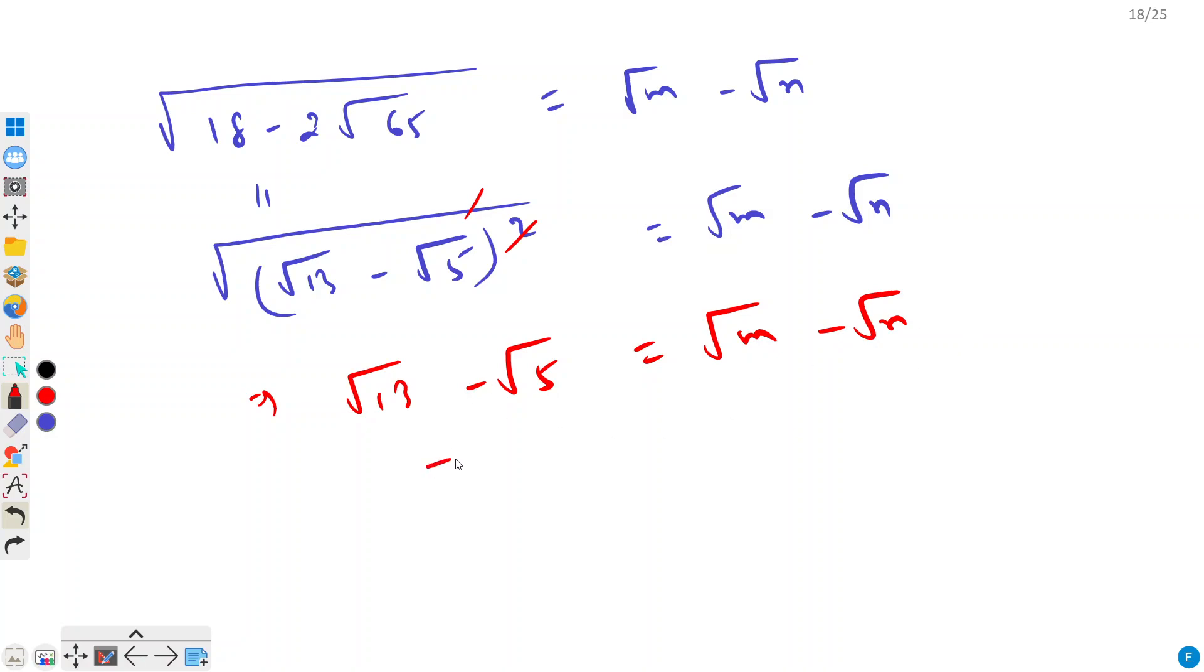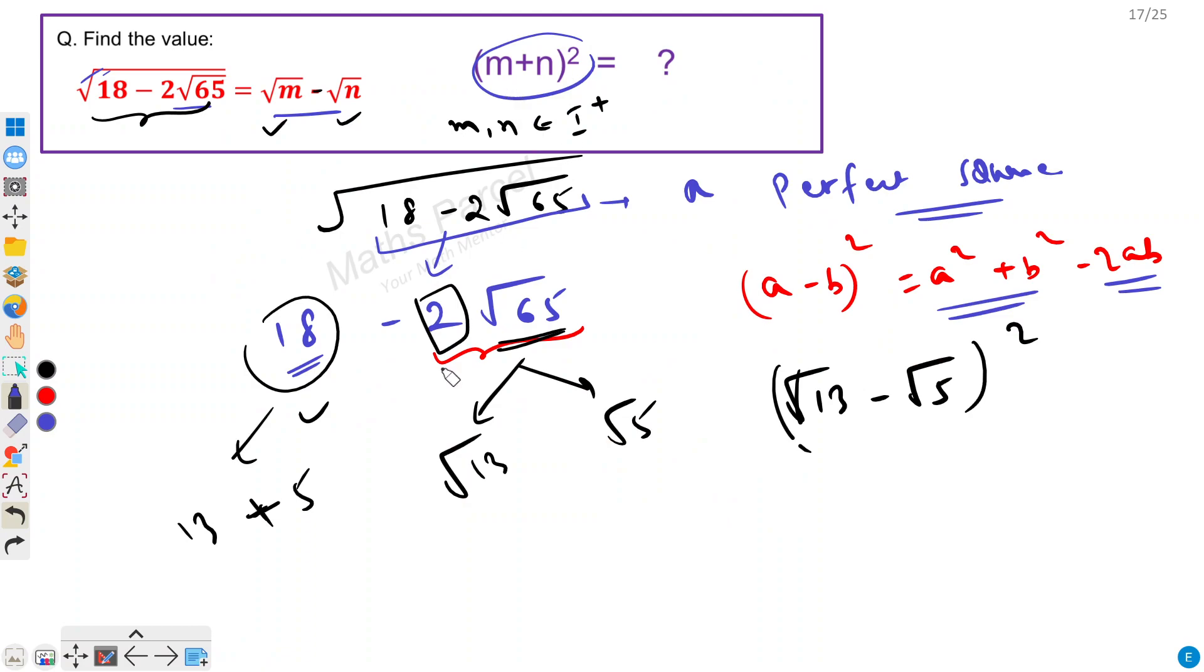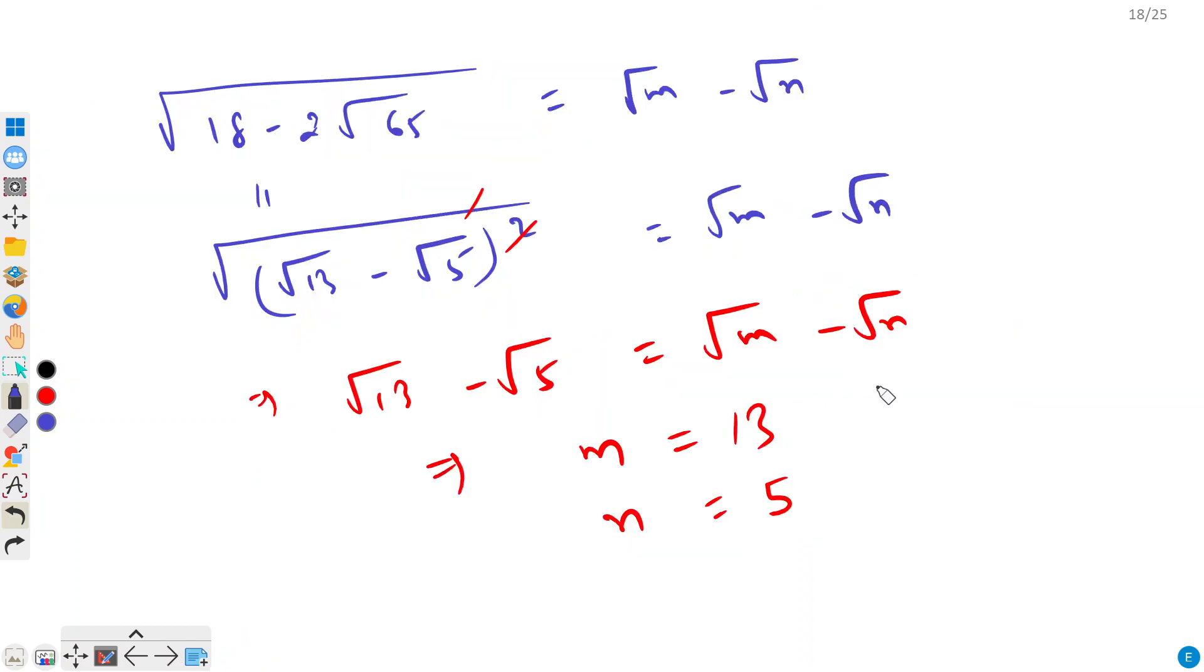So if we equate this then we will get m equal to 13 and n equal to 5. Now this is not our answer. We have to find (m+n)². So our answer would be (13+5)².